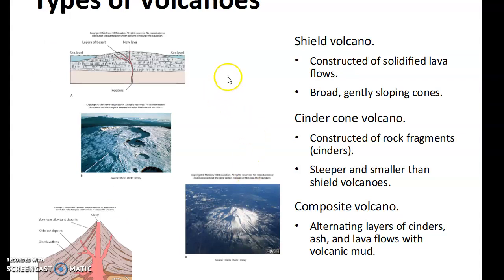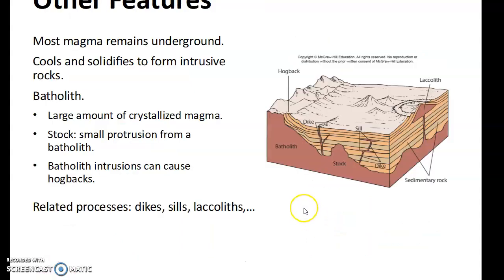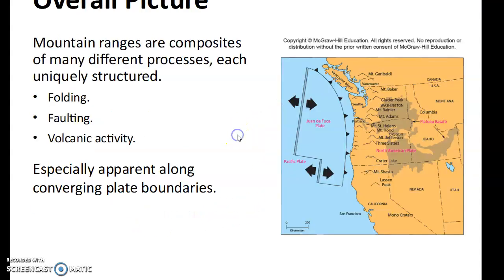Types of volcanoes: a shield volcano is constructed of solidified lava flows with broad, gentle slopes. A cinder cone is constructed of rock fragments with steep, smaller shield shape. A composite volcano has alternating layers of cinders, ash, and lava with volcanic mud. Most magma remains underground, cooled and solidified to form intrusive rocks. The batholith is a large amount of crystallized magma; a stock is a small protrusion of the batholith. These features have different names according to their shape and position.